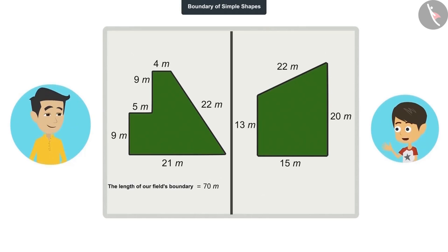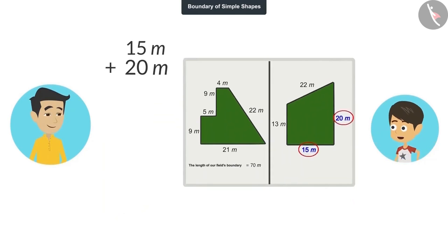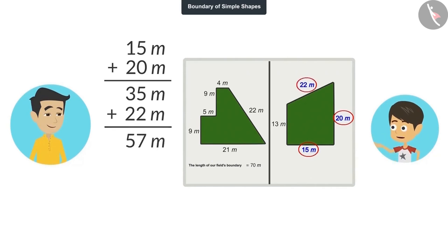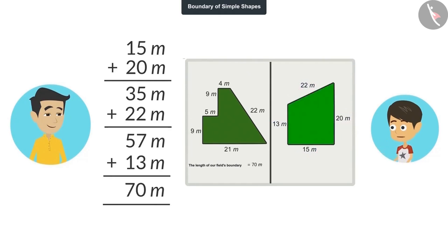Okay, let me tell you the length of uncle's farm's boundary. It has only four edges, so its boundary will be less than our field's boundary. 15 added to 20 is 35 meters. 22 meters added to 35 is 57 meters. And 13 meters added to 57 meters is 70 meters. Papa, the length of uncle's farm's boundary is 70 meters.